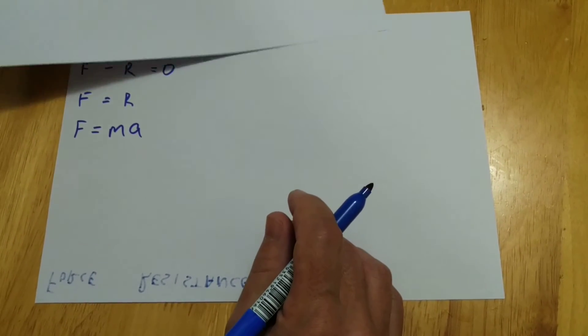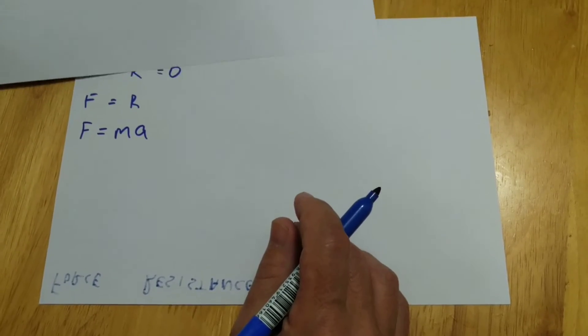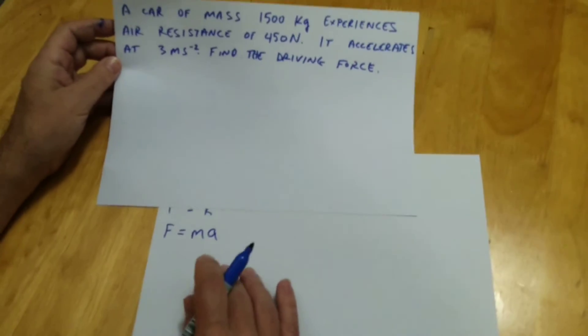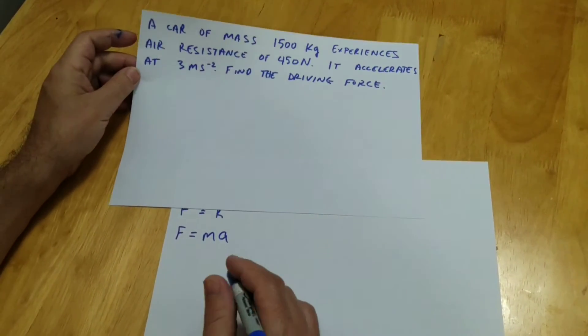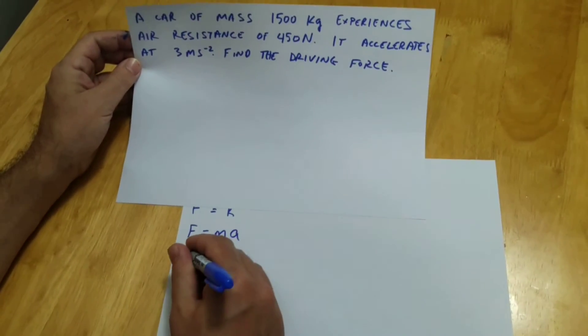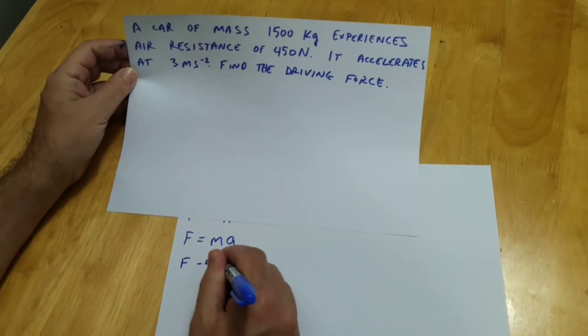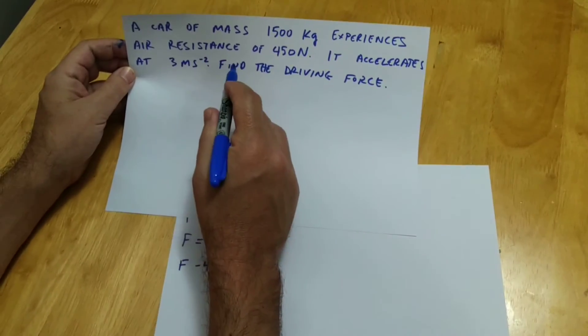So whenever you're working with Newton's first and second law, please use this formula. A car of mass, so it's pretty straightforward, I think. So we're going to subtract 450 from F, because that's our resistance,